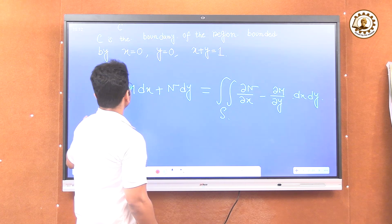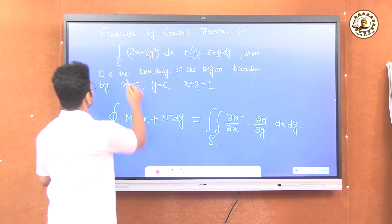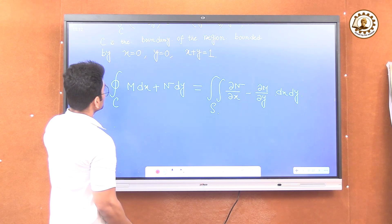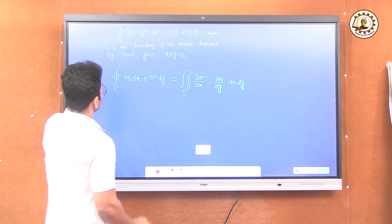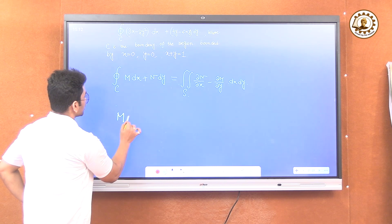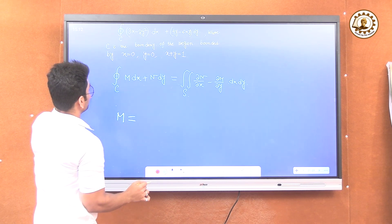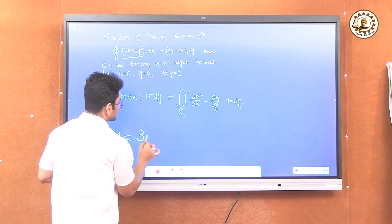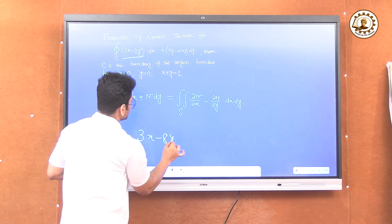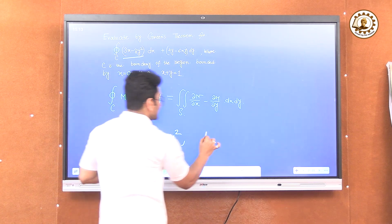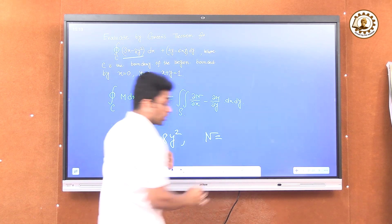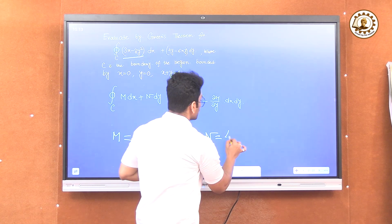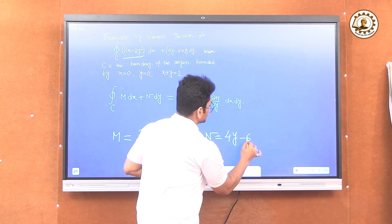We have to evaluate this closed line integral. Here, M is the coefficient of dx, which means M equals 3x minus 8y squared. And N is the coefficient of dy, which means N equals 4y minus 6xy.